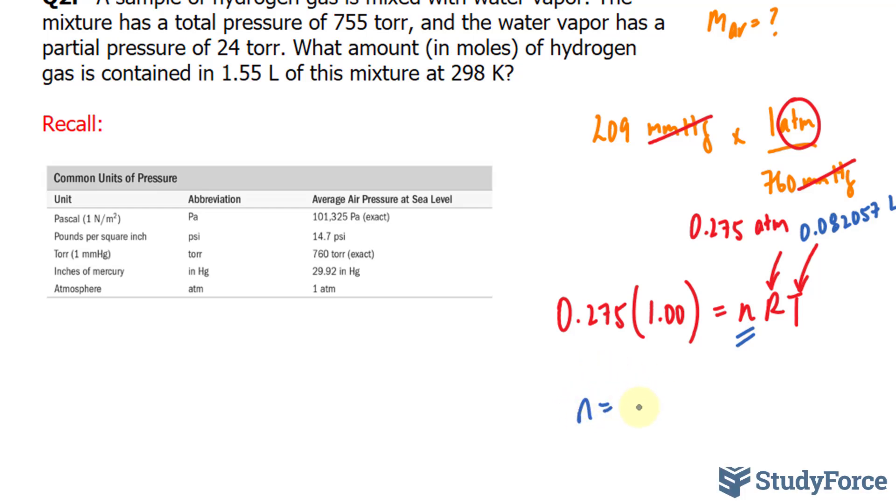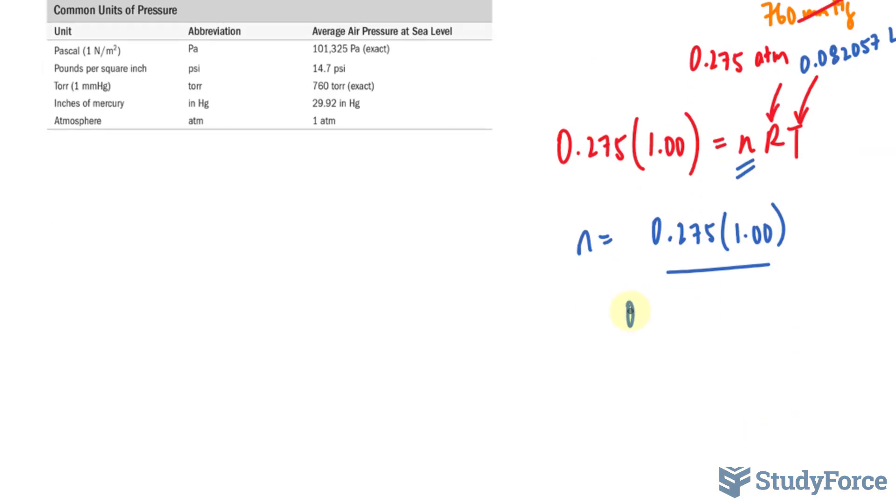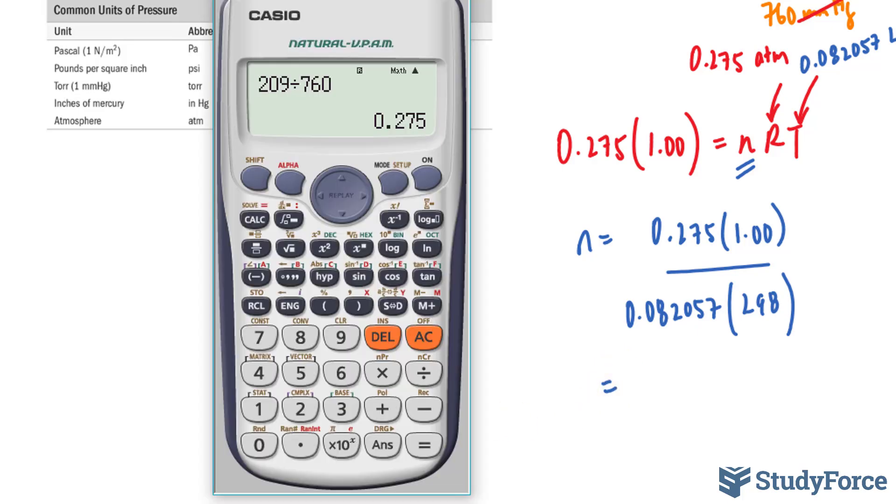So let's go ahead and find out what n is equal to. n is equal to this divided by RT. 0.275 times 1.00 divided by 0.082057 times 298. Let's go ahead and find out what that is. 0.275 times 1 is the same thing divided by the factors at the bottom. 0.082057 times 298. This gives us 0.0112.